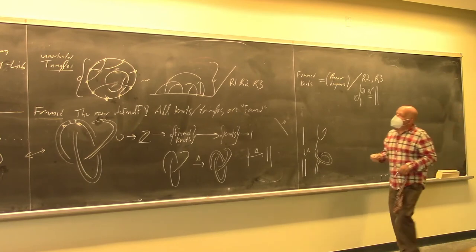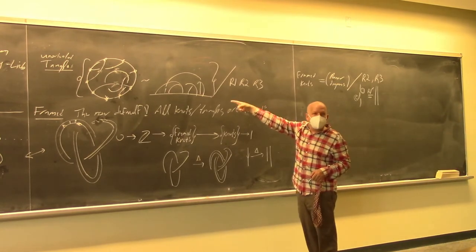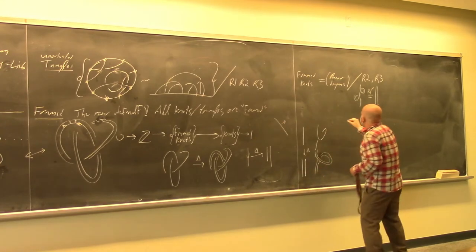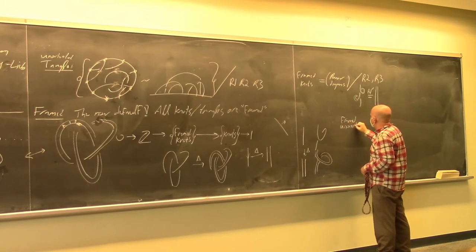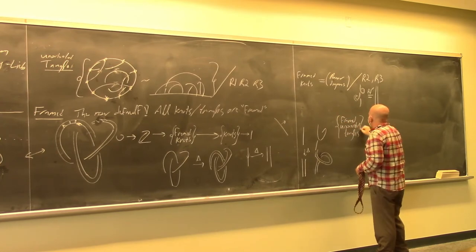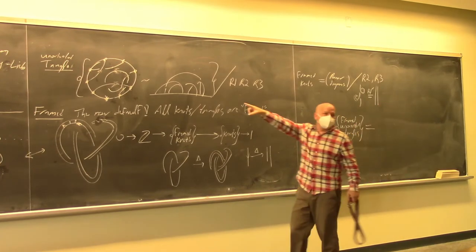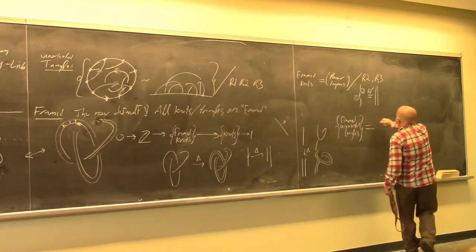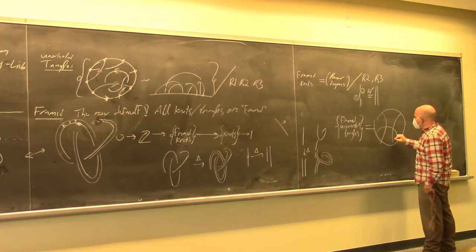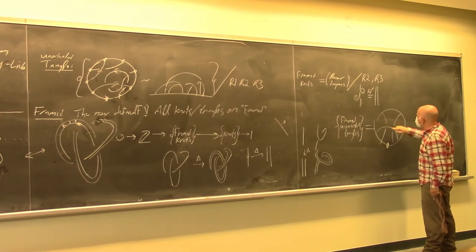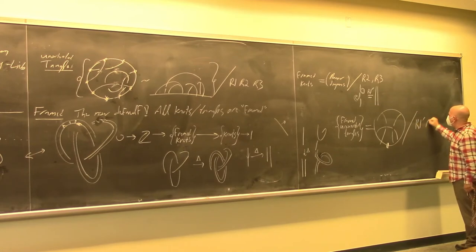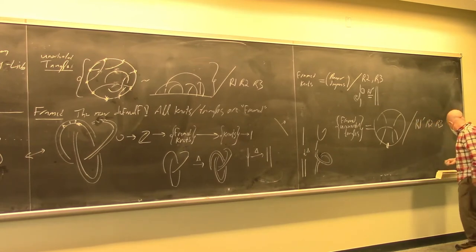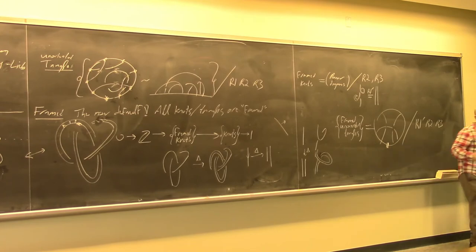So now I can define framed unoriented tangles. These will be pictures in the plane — pictures like this with crossings — modulo Reidemeister 1 prime, Reidemeister 2, and Reidemeister 3.